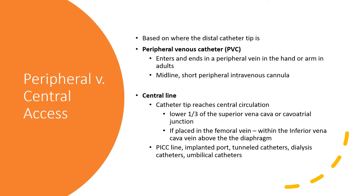The difference between a peripheral and a central line is determined by where the end of the catheter tip is. A peripheral catheter ends in a peripheral vein, either in the hand or an arm — for an adult, this would be a midline or a short peripheral intravenous cannula. In a central line, the catheter tip reaches the central circulation, either in the lower third of the superior vena cava or the cavoatrial junction, and if placed in the femoral vein, within the inferior vena cava above the diaphragm.